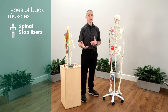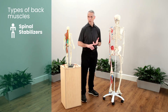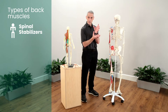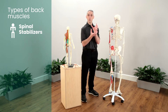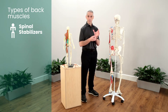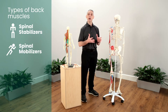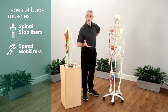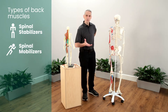We have two different types of muscles in our body: stabilizers and mobilizers. One helps the muscles or the bones to stay in place and really helps to guide them where they're supposed to be. They're deep to the spine. Then we have mobilizers that are a little bit more superficial — you can actually feel these if you reach to your back.